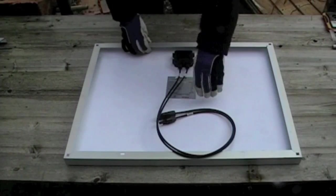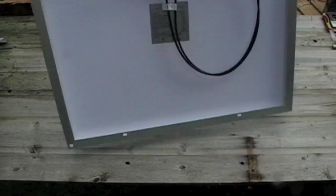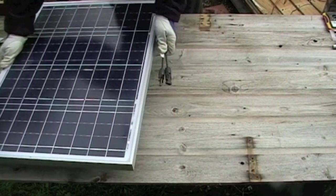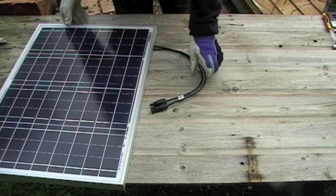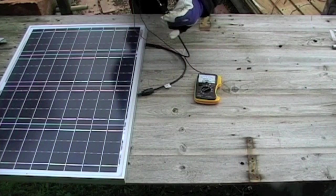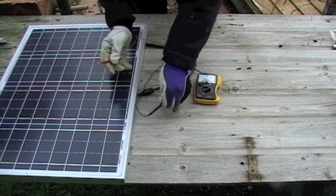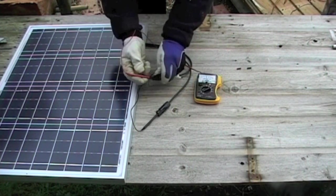Now today's a typically cold and cloudy British autumn day, but I'll turn the panel over, connect it to my multimeter, and see how much electricity it's generating. So negative to negative, and as I connect up the positive, the multimeter should register a voltage. Good, that's working.